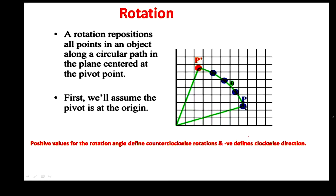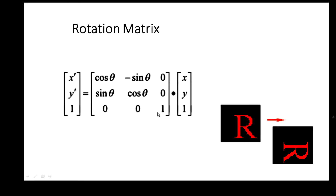Position p moves to p dash from the origin, and theta tells you how much it is rotated. If theta is positive, it will rotate in the counterclockwise direction. If theta is negative, it will rotate in the clockwise direction. In the picture, it moves from p to p dash in counterclockwise direction, so here theta is positive. The rotational matrix is [cos theta  -sin theta  0 / sin theta  cos theta  0 / 0  0  1]. The image R is rotated by 90 degrees to get the output image.